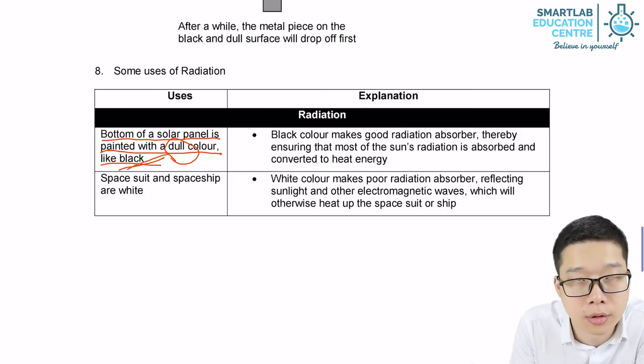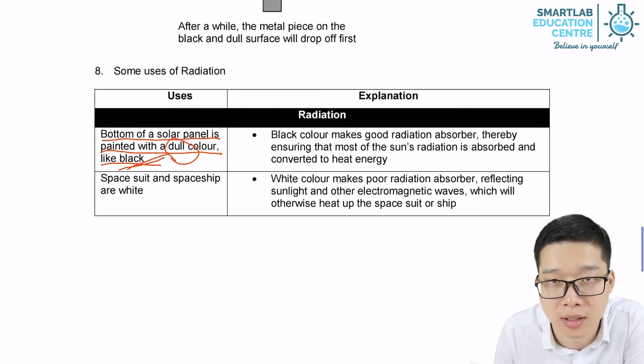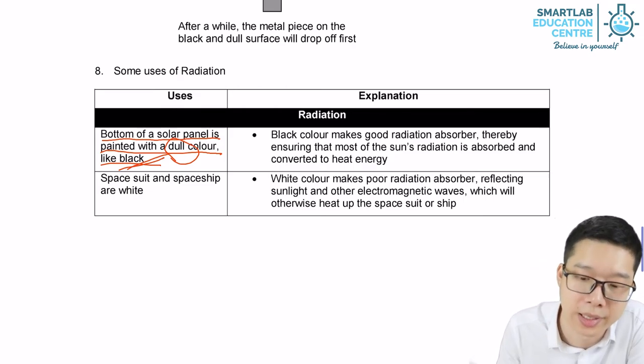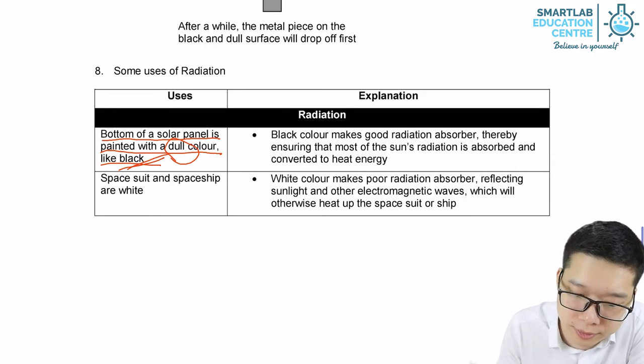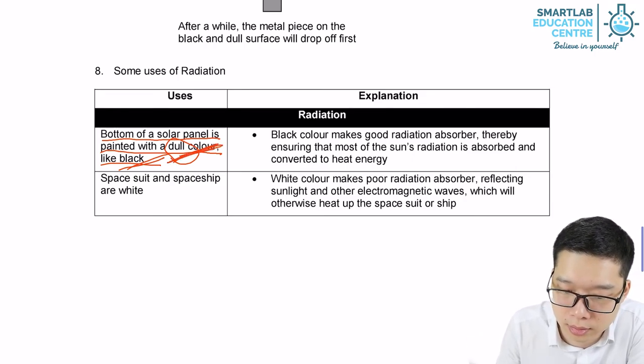dull color. For example, black, blue. Reason being, we want the solar panel to be a good absorber of sunlight. So that has to be dark. It has to be rough. It has to be dull color.